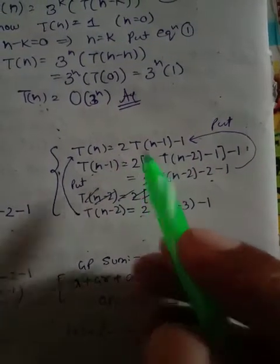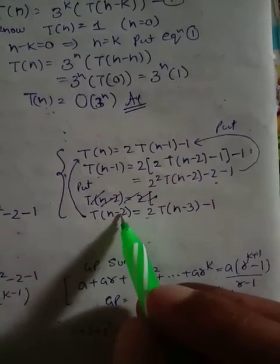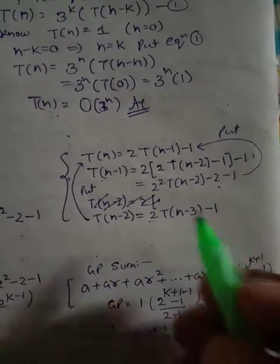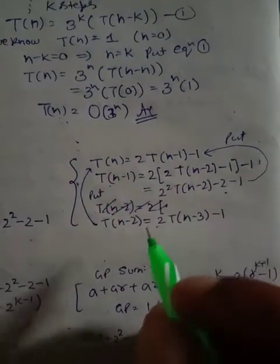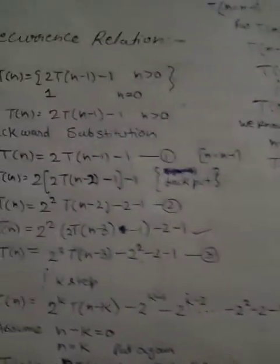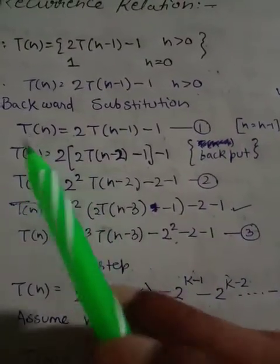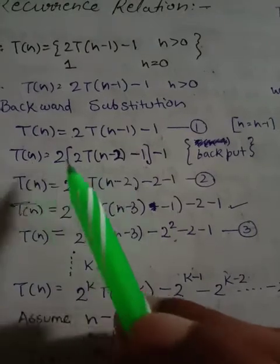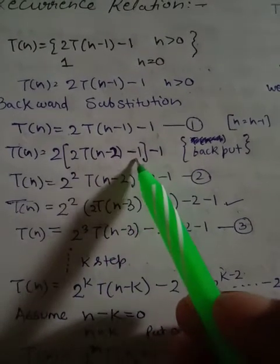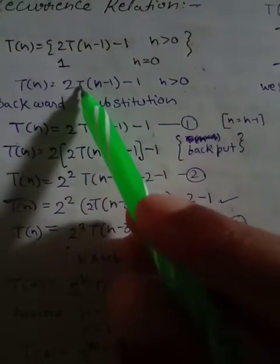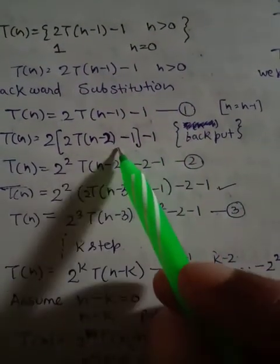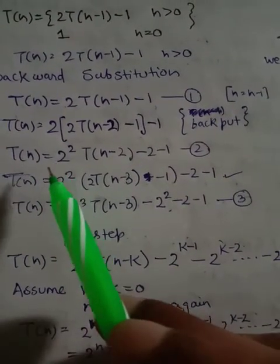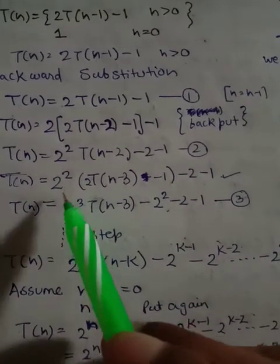Similarly, substituting n-2 and n-3 into T(n), we get T(n-3) - 1 and so on. Continuing this pattern, at each step we expand the substitution further, giving us a series of related expressions for n-2, n-3, and beyond.